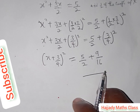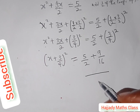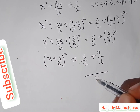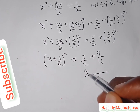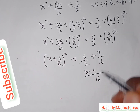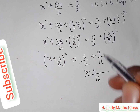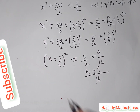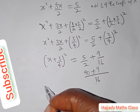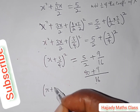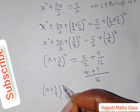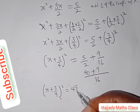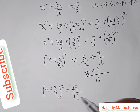Solving the right-hand side, the LCM is 16. So 2 into 16 is 8, and 8 times 5 gives 40; 16 into 16 is 1, multiplied by 9 gives 9. Therefore (x + 3/4)² = (40 + 9)/16 = 49/16.